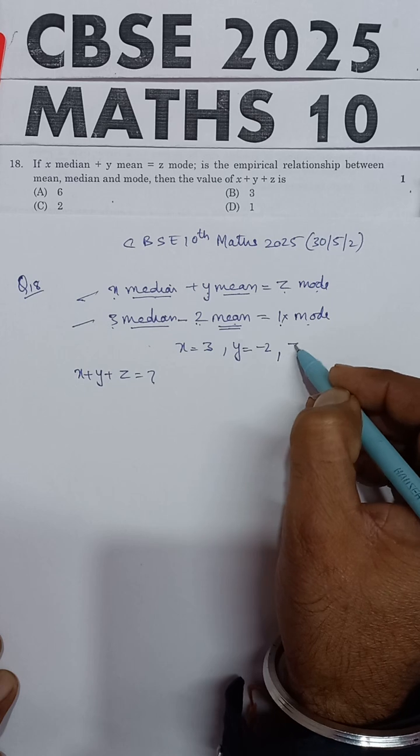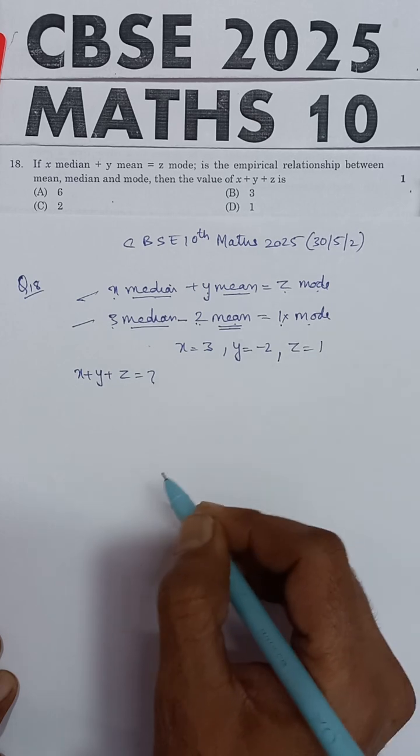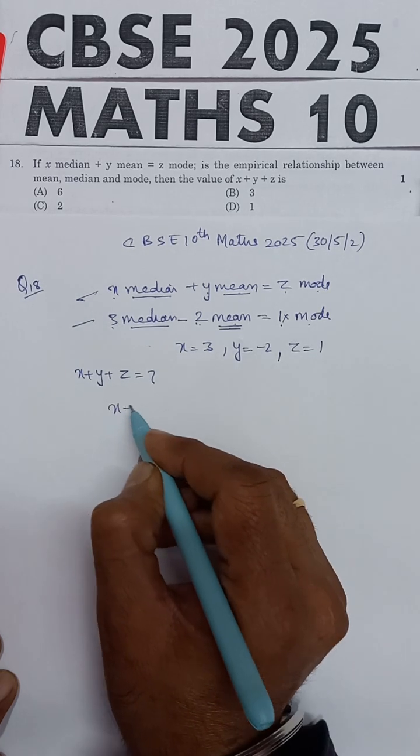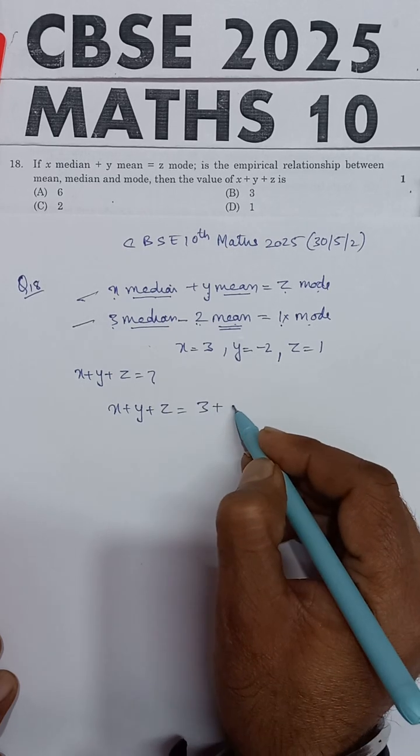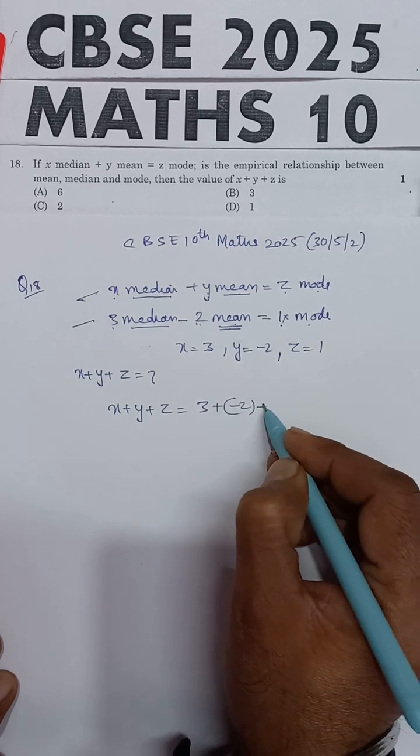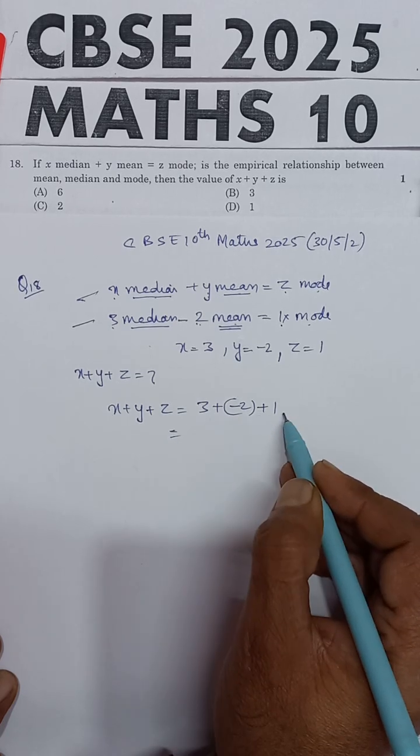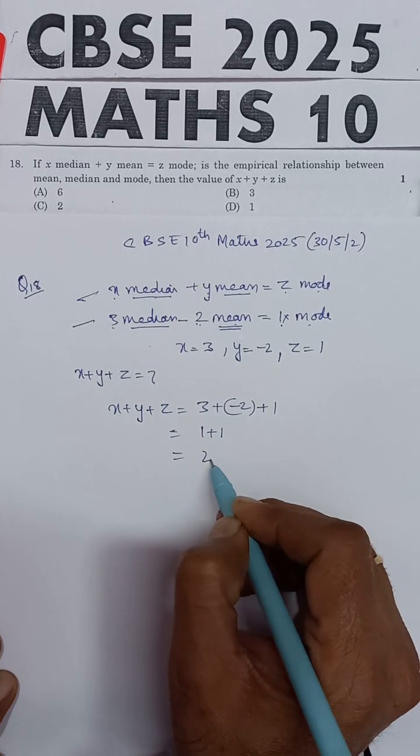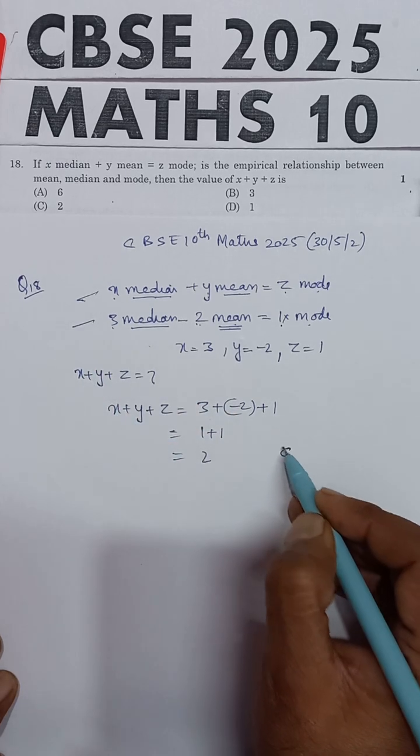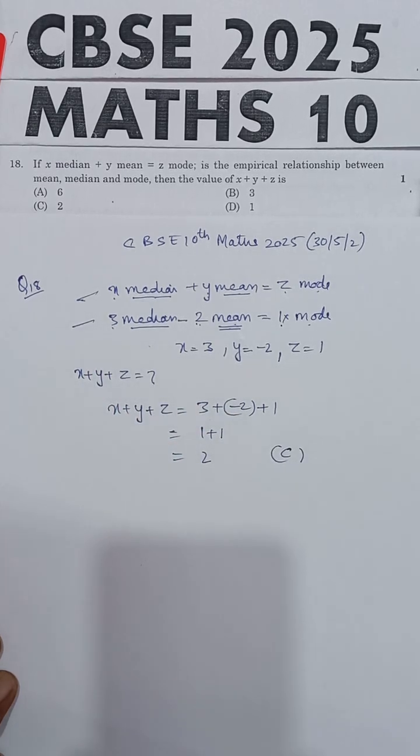So we have to find the value of x plus y plus z. x is 3, y is minus 2, and z is 1. So this will be 3 minus 2 is 1, plus 1 is 2. So 2 is the answer, given in option C. Option C is the correct answer.